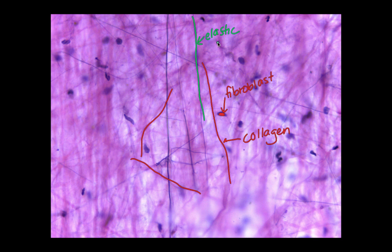Because areolar connective tissue is loose, that means it has more ground substance and less fibers. So although you see a lot of fibers in here, you're going to see a lot less than when you look at the dense connective tissues. All the spaces that you see in here, that's where the matrix or the ground substance is found. The matrix is composed of both the ground substance and the fibers. Areolar connective tissue will also have macrophages, mast cells, adipocytes, and other cell types.